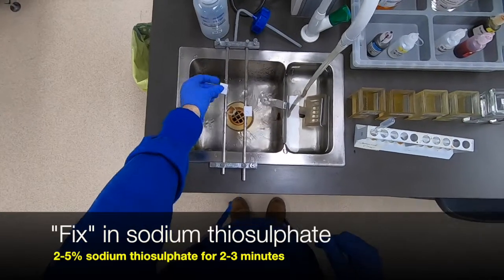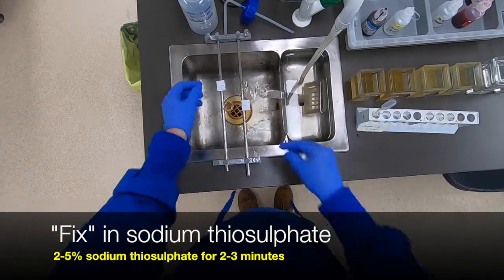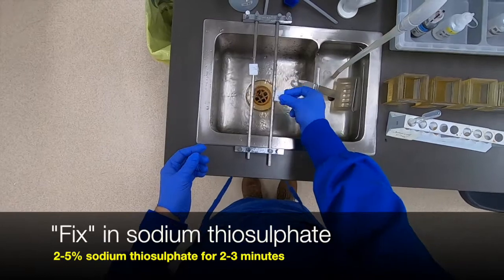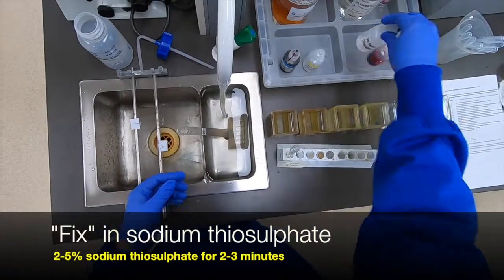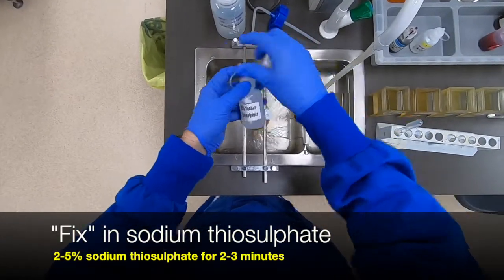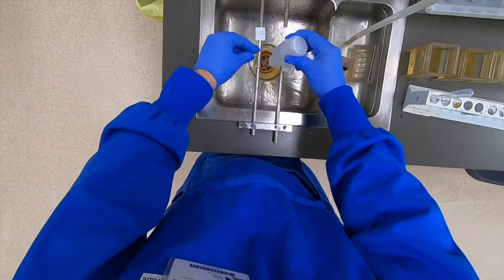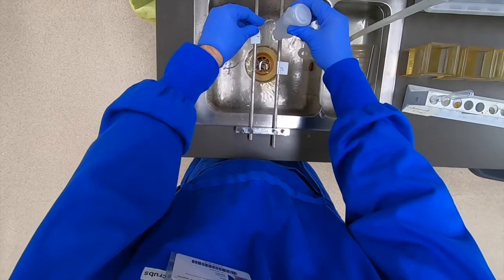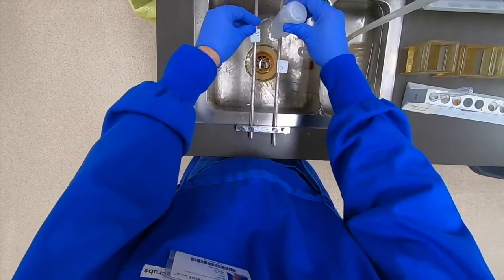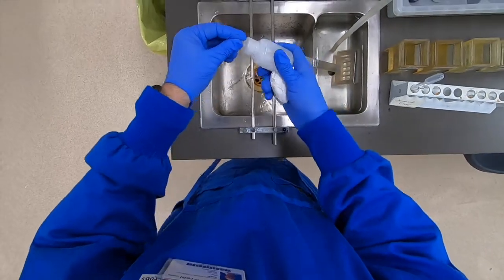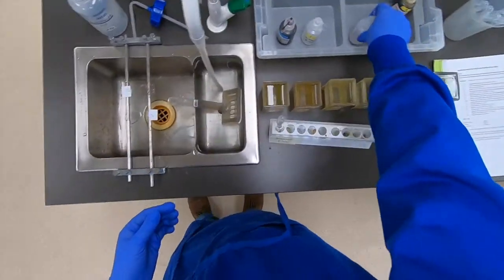We then subsequently remove any traces of non-reduced silver from the slides. And we do that by brief treatment with sodium thiosulfate. And this is often referred to as a fixing step in order to prevent any further deposition of metallic silver to non-specific areas.